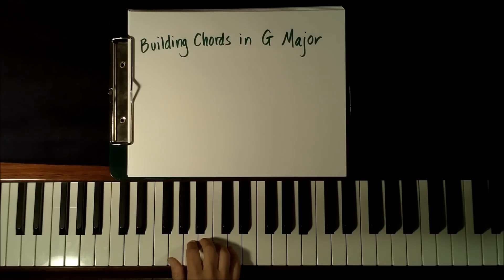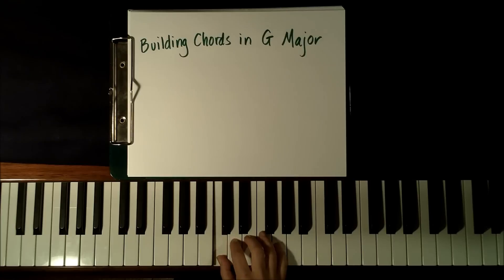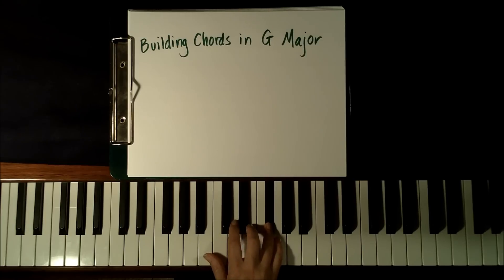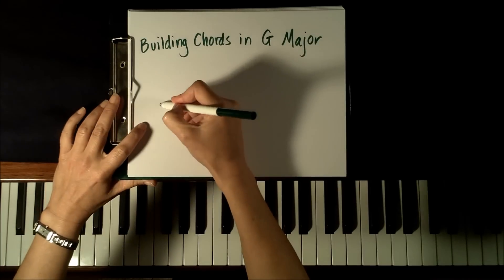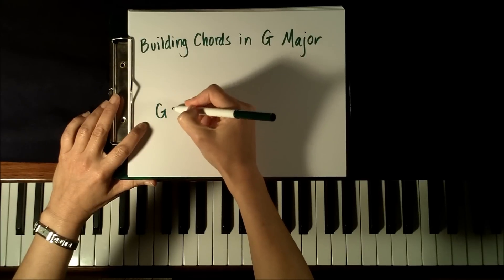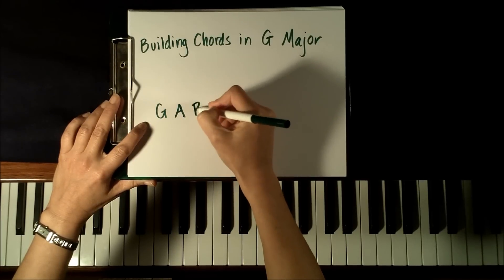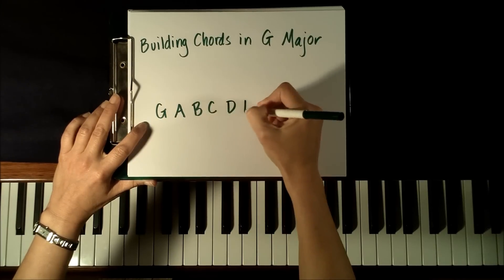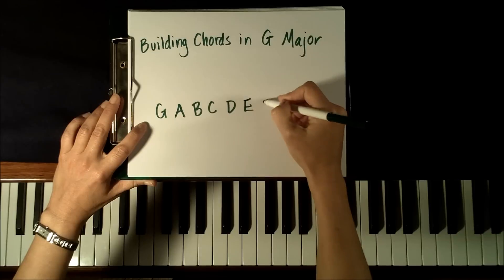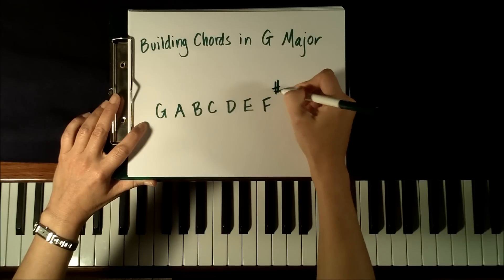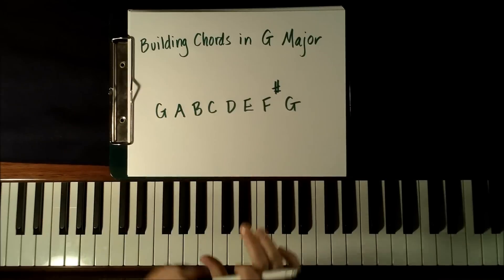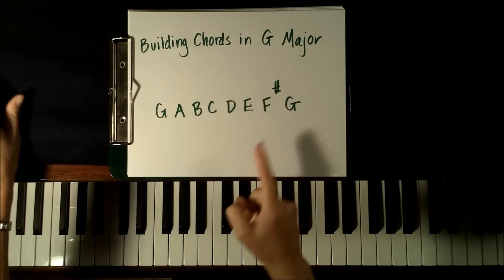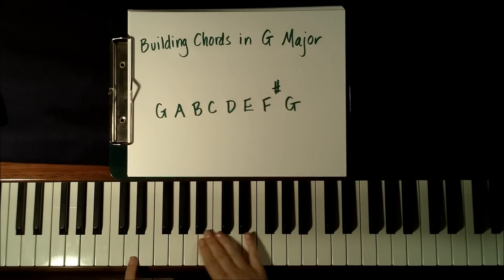starts here on G and it plays G, A, B, C, D, E, F sharp, G. So starting on G, there aren't very many black keys in the key of G — there is only one and it's F sharp. And when we're just playing through the scale, we really only have to concern ourselves with it at one position on the piano.